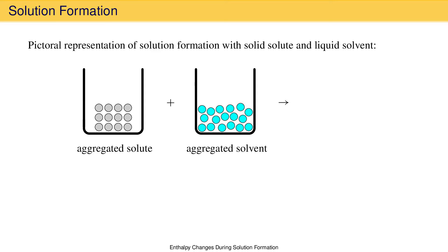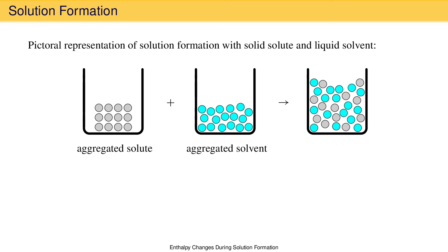When mixed, the solute particles disperse in the solvent. Solvent particles move away from each other to make room for the new solute particles and the solute particles fill those spaces. The result is a homogeneous mixture of solute and solvent. A representation of this is shown here where the gray and the blue circles have been evenly mixed in a random fashion. This is a representation of the solution.